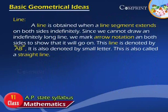Line: A line is obtained when a line segment extends on both sides indefinitely. Since we cannot draw an indefinite long line, we mark arrow notations on both sides to show that it will go on. This line is denoted by line AB. It is also denoted by small letter. This is also called a straight line.